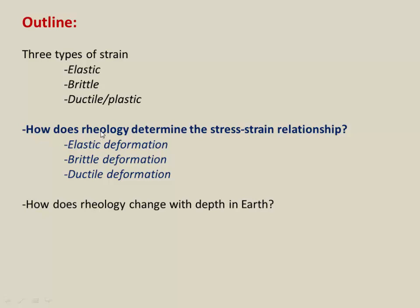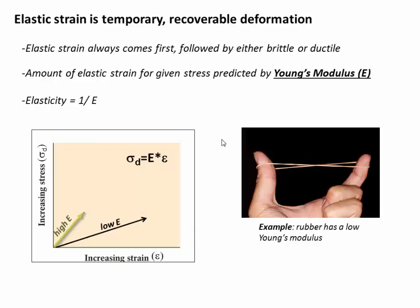Now that you're familiar with the three types of strain, let's talk about how rheology dictates the stress-strain relationship in each case, starting with elastic strain. We can think of elastic strain much like a spring that's either stiff or weak. A stiff spring takes more stress to compress than a soft spring, and that stiffness or elasticity is defined by Young's modulus — essentially a parameter that relates differential stress to the amount of strain accumulated. When Young's modulus is small, we get a lot of strain for a little stress; when it's big, we get a small amount of strain.